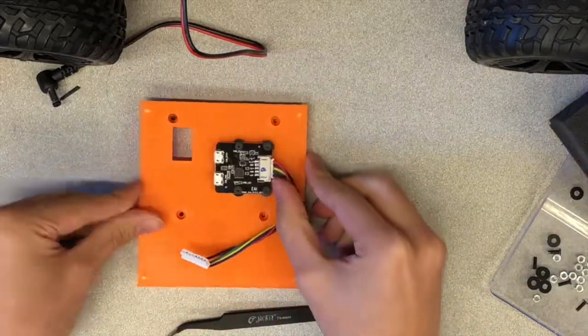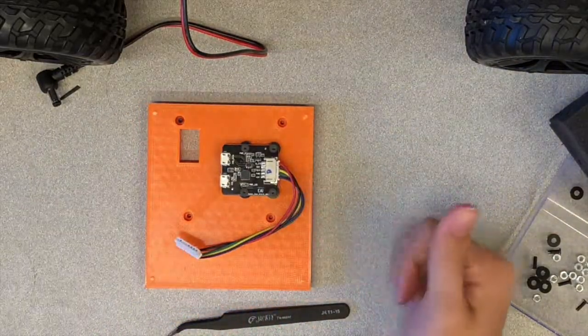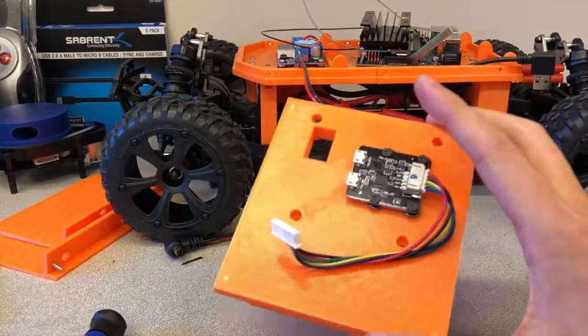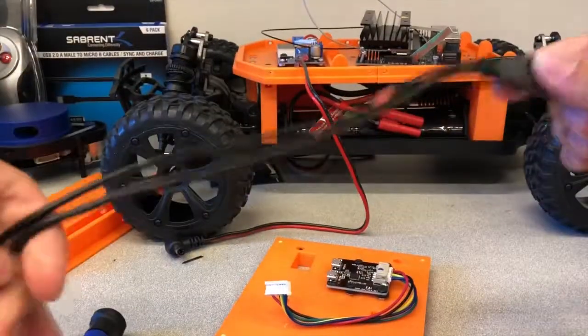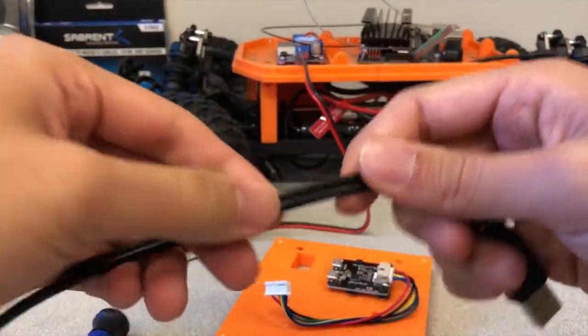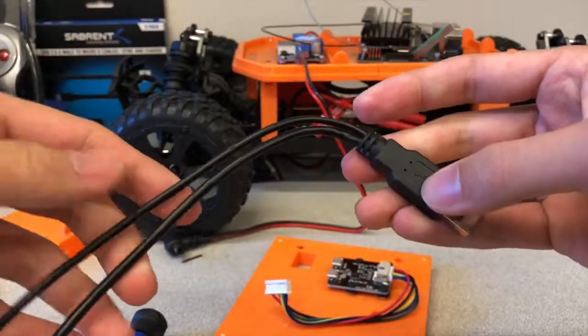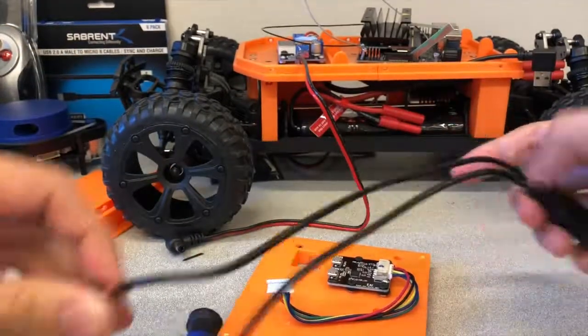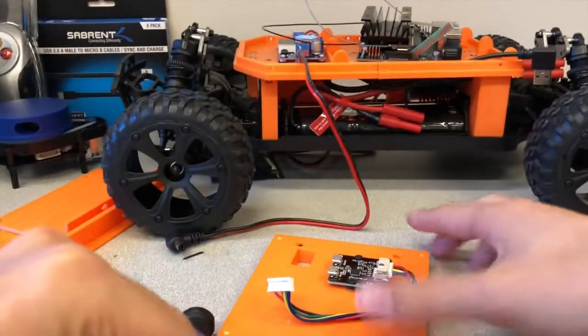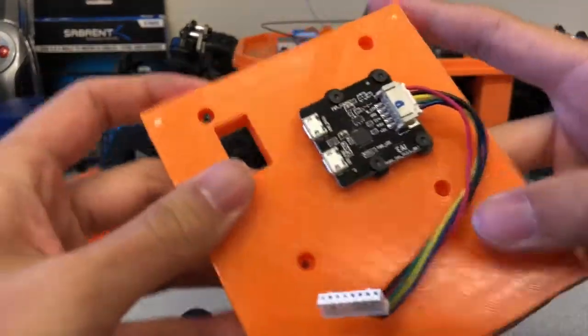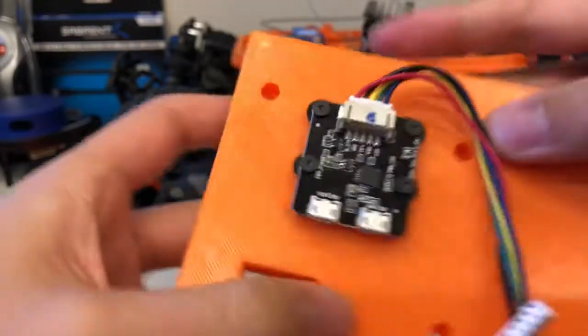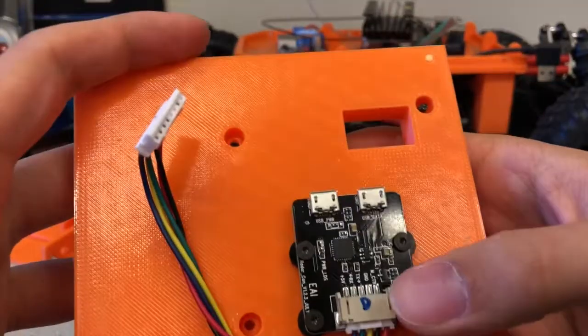Also plug the USB micro splitter into the printed circuit board. Note that there is red plastic around one of the USB micro splits. This corresponds to power which should be plugged into the USB connector labeled PWR on the PCB.